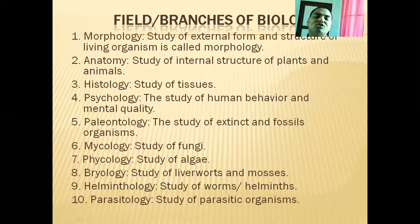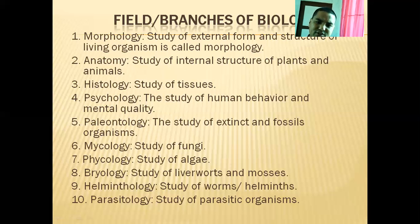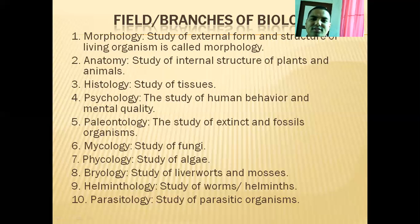For grade 11, I will explain some points here. First of all, morphology — morphology means the study of the external structure of animals or plants. Anatomy means the study of the internal structure of plants and animals. Through anatomy we can discuss the digestive system, circulatory system, respiratory system, and reproductive system. Histology is the study of tissue.